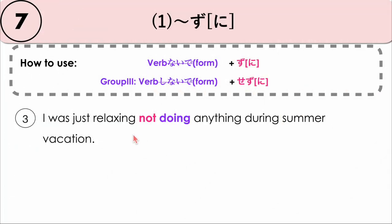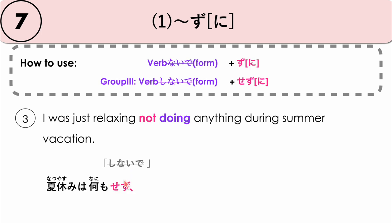Another example: I was just relaxing, not doing anything during summer vacation. Natsu yasumi wa — during summer vacation — nani mo — nothing. Our verb is suru or shimasu, which in this case is not to do, shinaide. So we simply change this to natsu yasumi wa nani mo sezu or sezu ni. We can remove ni, so it's optional. Natsu yasumi wa nani mo sezu, uchi de nombiri shiteita — 'nombiri shiteita' means to just relax and do nothing.